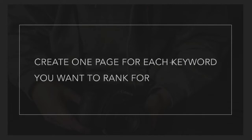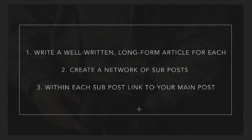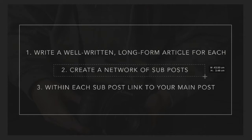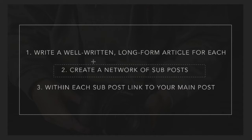In our earlier video, you already went through and selected the keywords that you want your website to rank for. After we have those main keywords selected, we're going to write a well-written long-form article for each — essentially just an individual page for each of those keywords. Then we're going to create a network of sub posts, which are smaller niche articles that relate to this topic in some way. And within each of those sub posts, we're going to link to our main post.